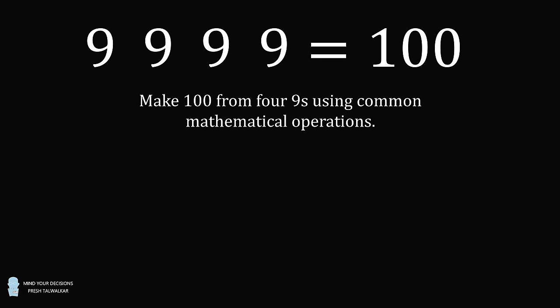Hey, this is Presh Talwalkar. Here's a really fun puzzle I came across. You are to make the number 100 from four nines using common mathematical operations. What exactly are common mathematical operations? The puzzle doesn't specify, so I thought let's make this a little more concrete and put down some rules.